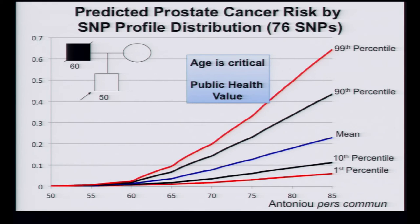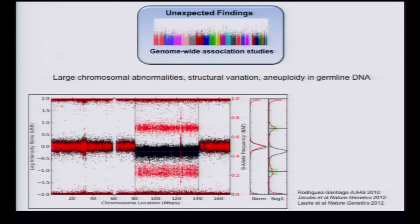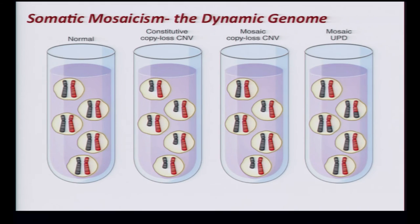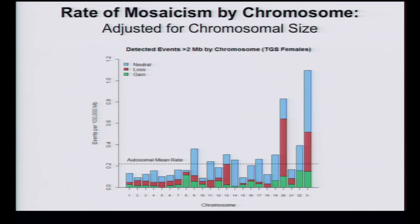For individually counseling people on the basis of SNPs, I think we still have a long way to go, despite what 23andMe, DecodeMe, and others have wanted us to think. We also have to take advantage of the most important risk factor for most of our cancers, which is age. If you look at prostate cancer and take the 76 SNPs, you can see a substantial separation between the first and 99th percentile in the distribution of those SNPs. It doesn't necessarily mean you're going to get the cancer, but it's important for public health implementation.